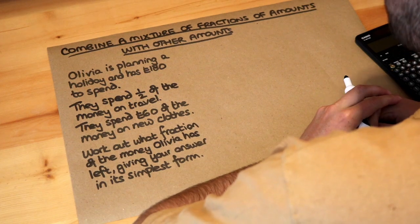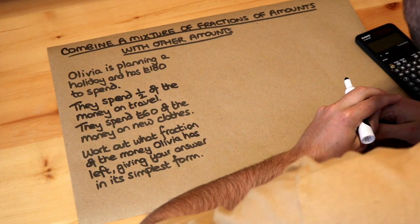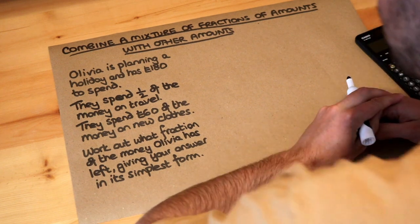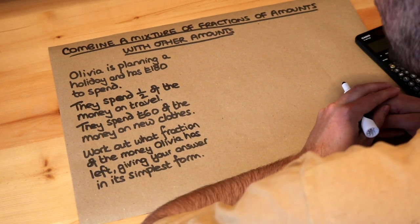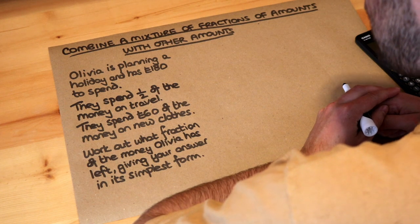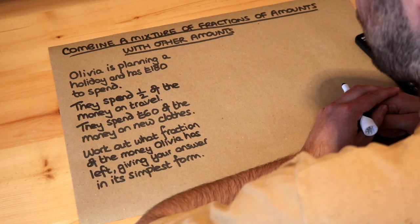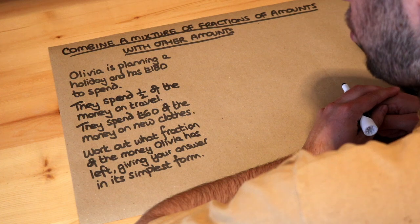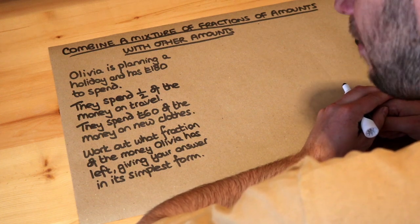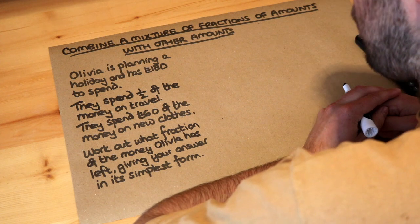Hello and welcome to this Dr Frost video on combining a mixture of fractions of amounts with other amounts. Olivia is planning a holiday and has £180 to spend. She spends half the money on travel and £60 on new clothes. Work out what fraction of the money Olivia has left, giving your answer in its simplest form.